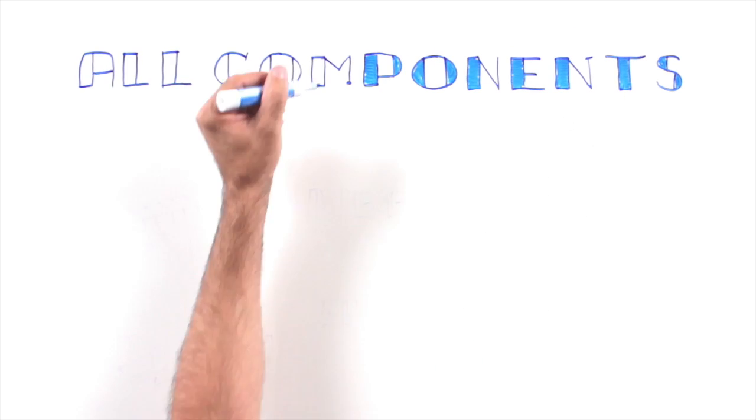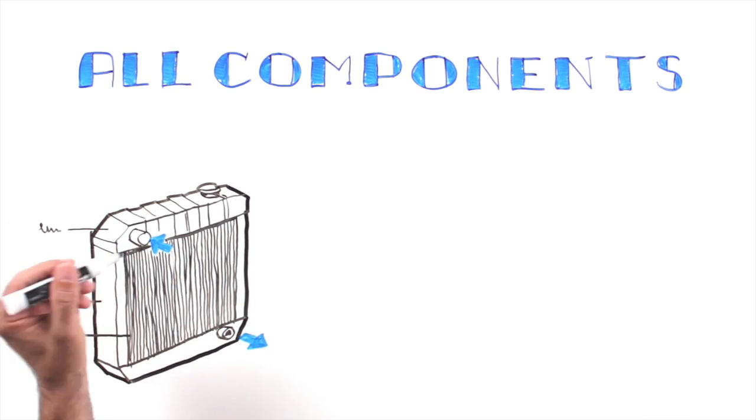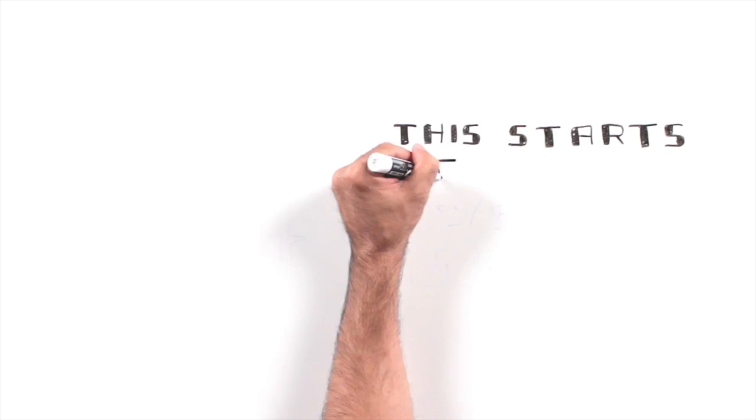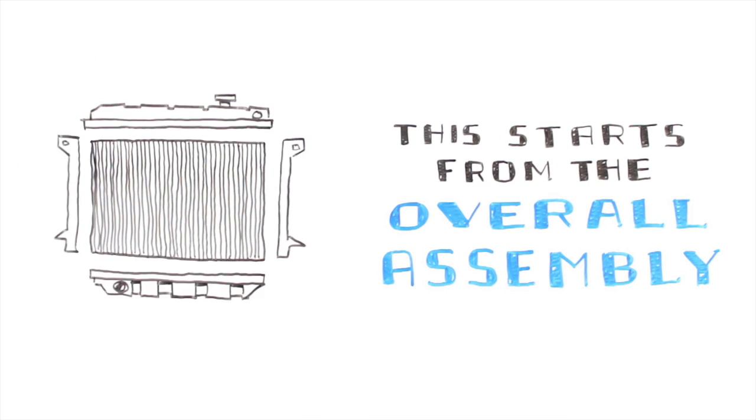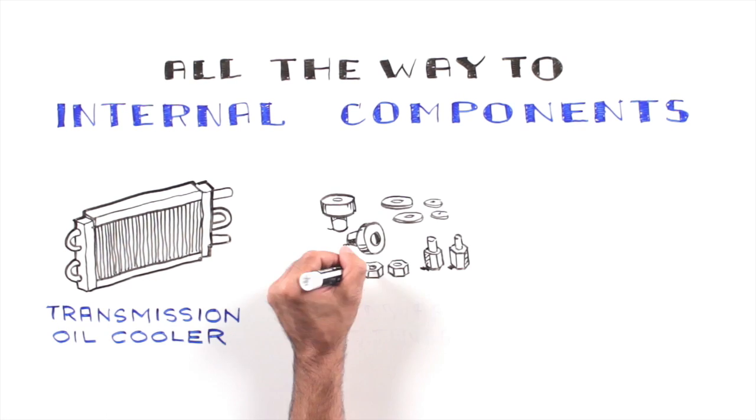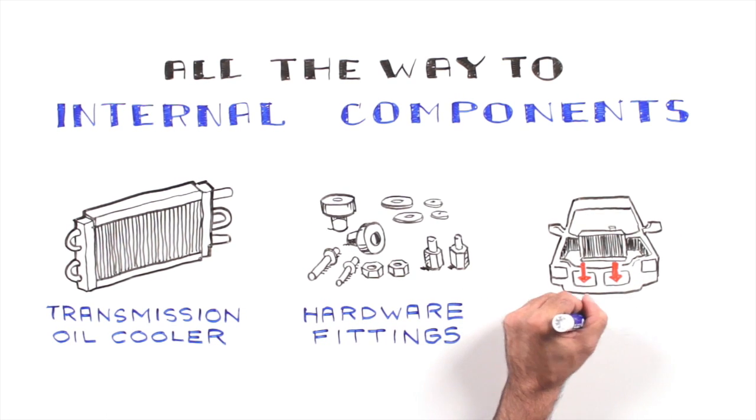Part of our validation consists of making sure all of the components used meet or exceed OEM specifications, and this starts from the overall assembly all the way to the internal components such as transmission oil coolers, hardware fittings, and overall fitment in the vehicle.